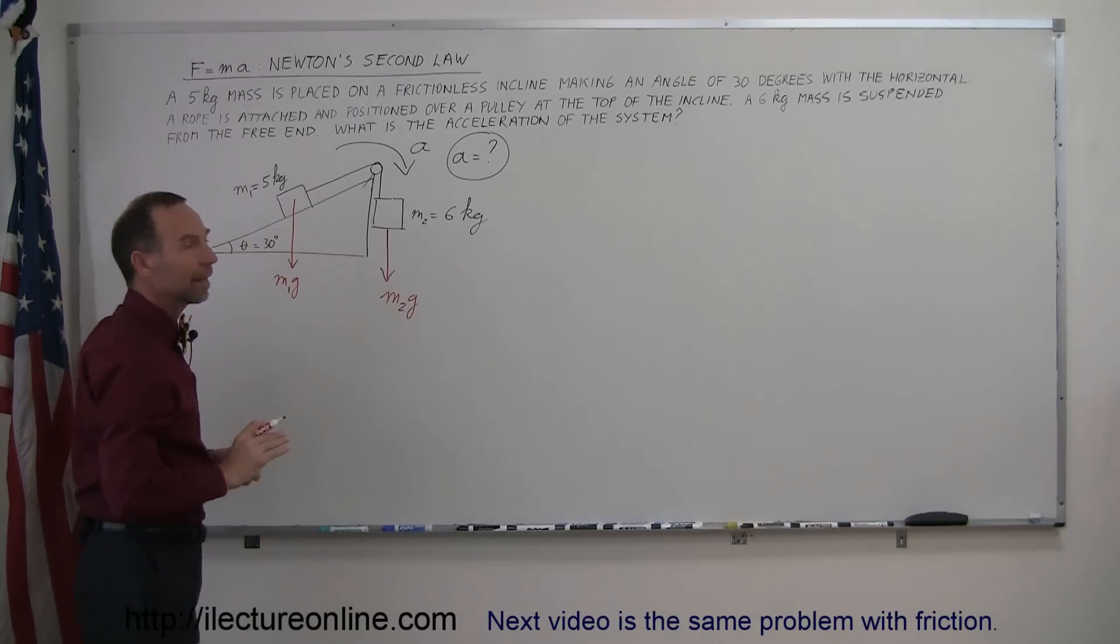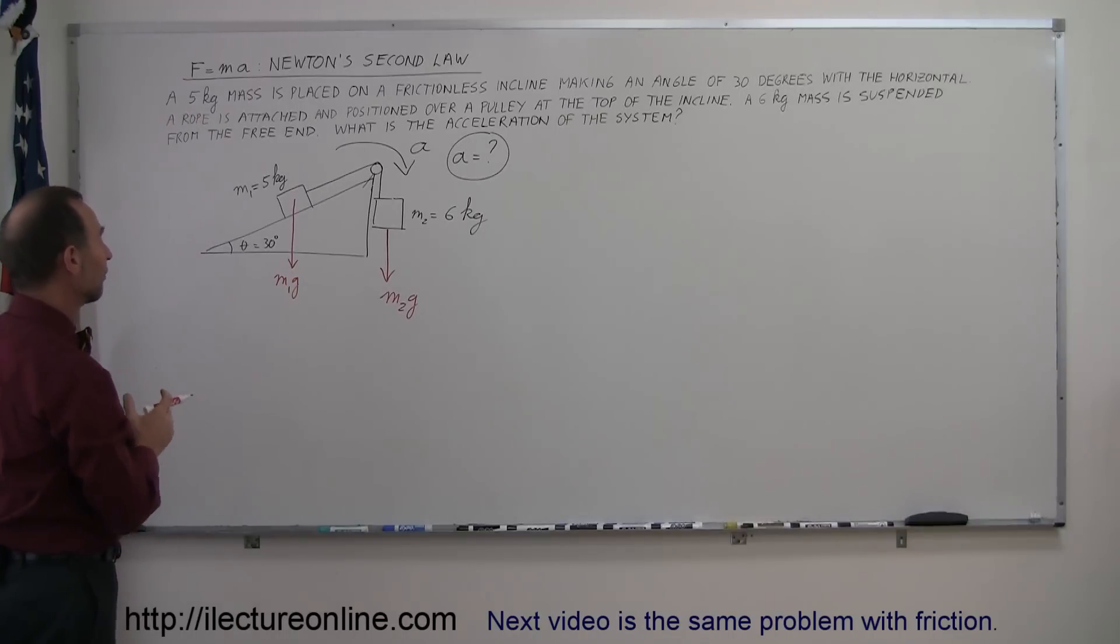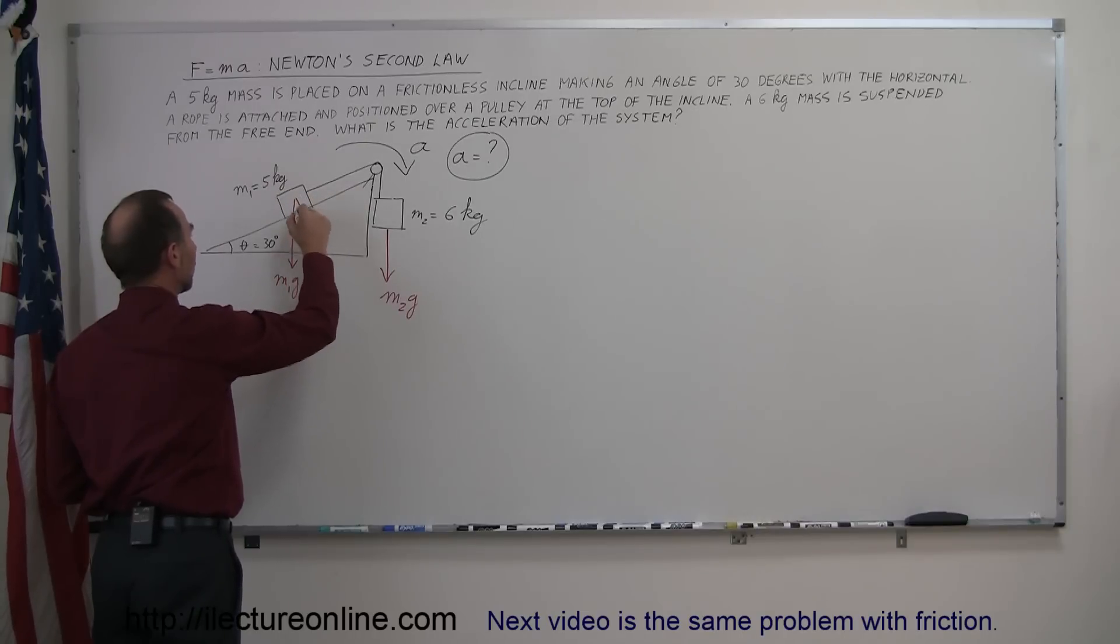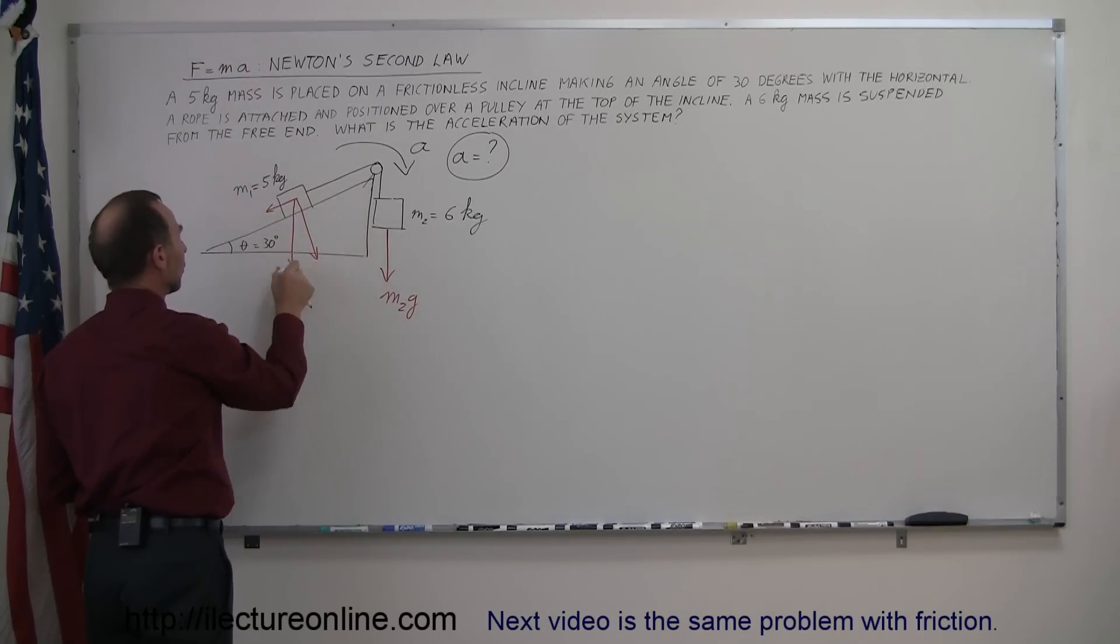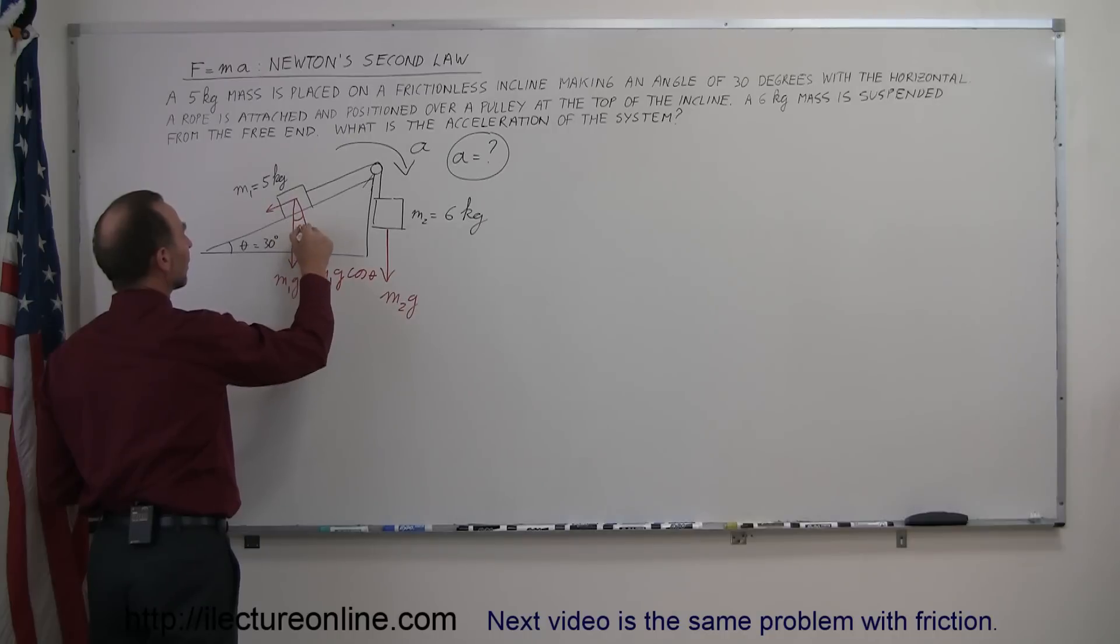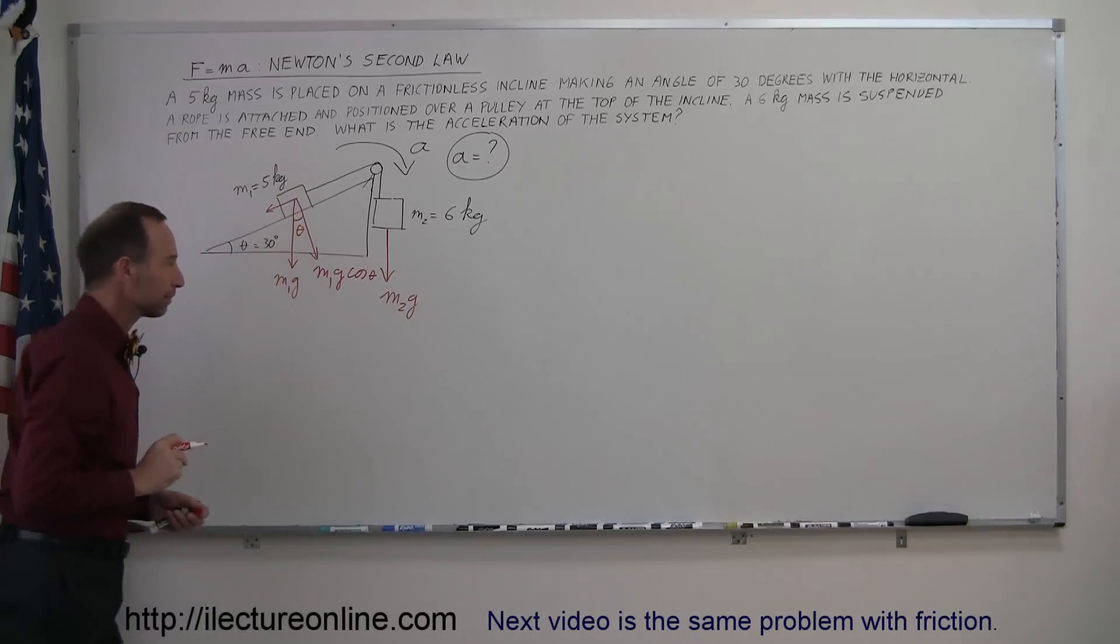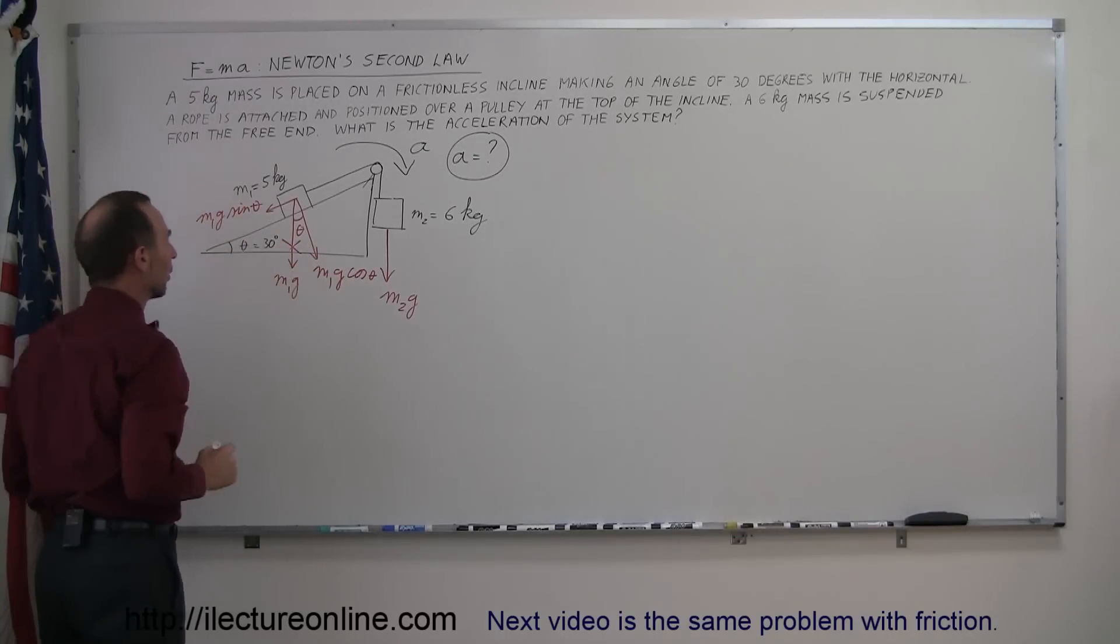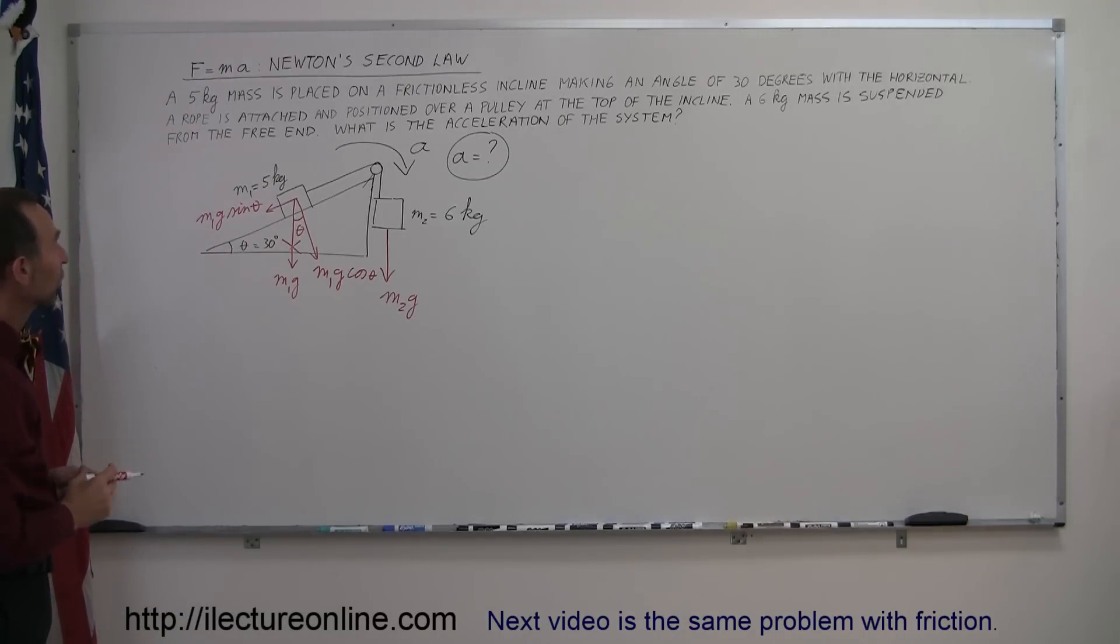But since it's on an incline, we then would like to take that force and divide it into its components. One component which is perpendicular to the incline, and the other component which is parallel to the incline. So this can be replaced by these two components. This can be said to be m1g times the cosine of the angle theta. This angle theta right here is the same as this angle theta right there. That makes this m1g sine of theta, and so this is no longer there. We've replaced it by its two components.